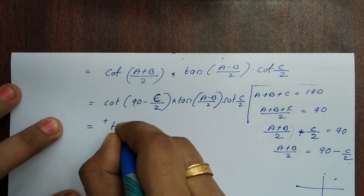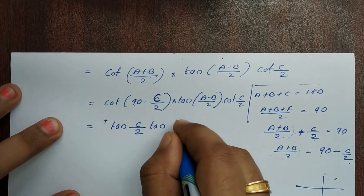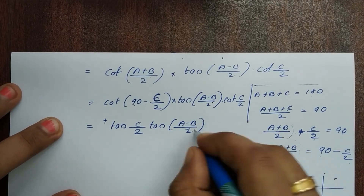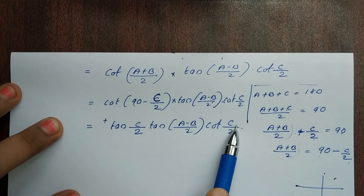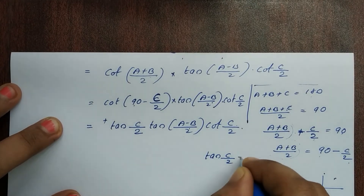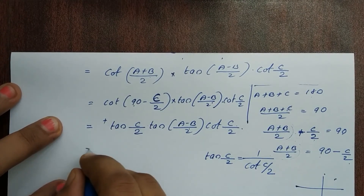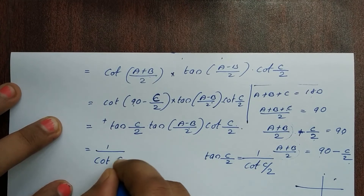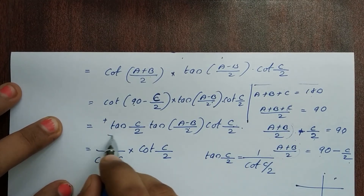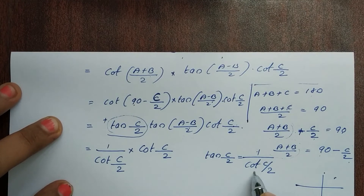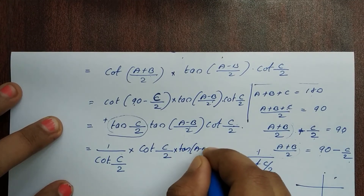Since cot(90 minus C/2) equals tan(C/2), we substitute. So the expression becomes tan(C/2) into tan((A minus B)/2). And 1 divided by cot(C/2) equals tan(C/2), so we use cot C by 2 in the final form.